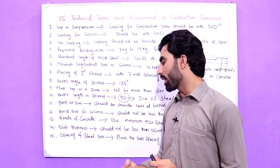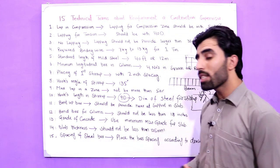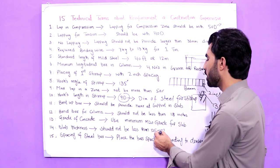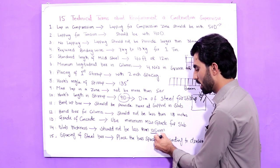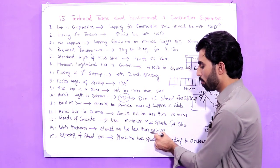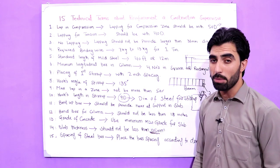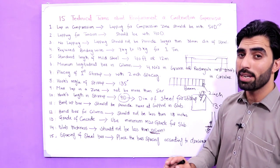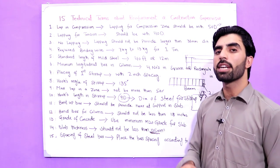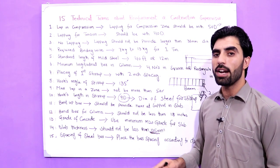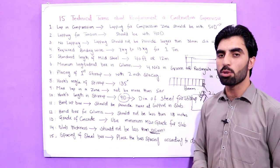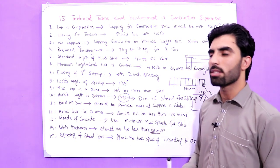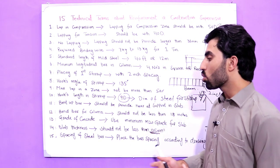The fourteenth term is slab thickness. The slab thickness should not be less than 125 millimeters. You can use more than 125 millimeters, but not less than 125 millimeters for an RCC slab.